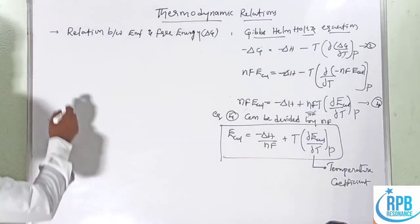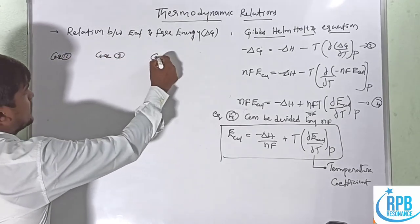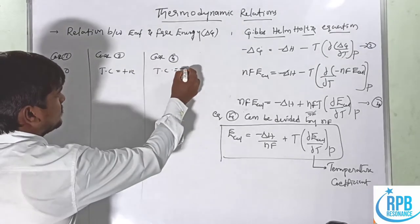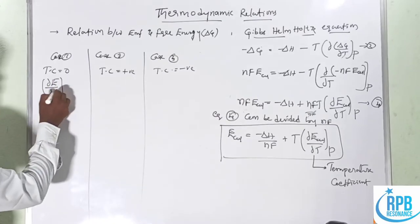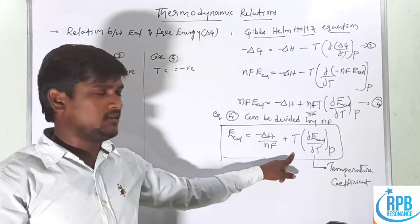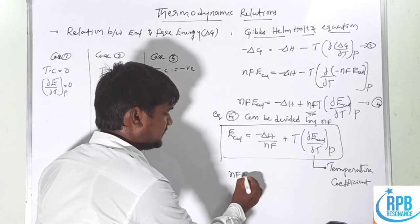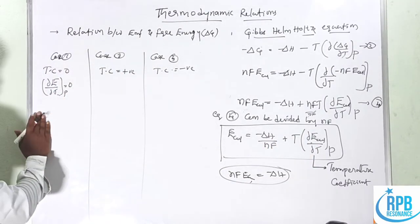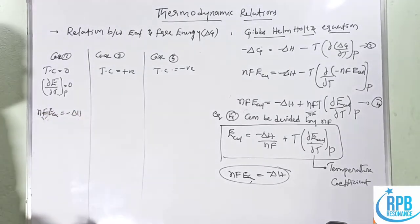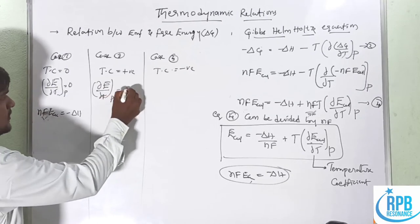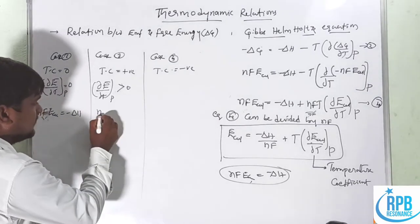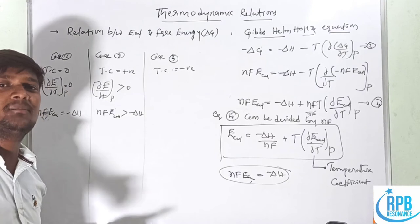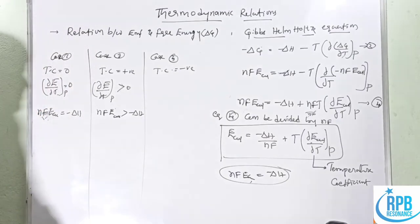Case 1: If ∂E/∂T = 0, then nFE_cell = -delta H. The electrical energy equals the heat of the reaction. Case 2: If ∂E/∂T is positive (greater than zero), then nFE_cell > -delta H. The electrical energy exceeds the enthalpy, meaning excess energy is absorbed from the surroundings.